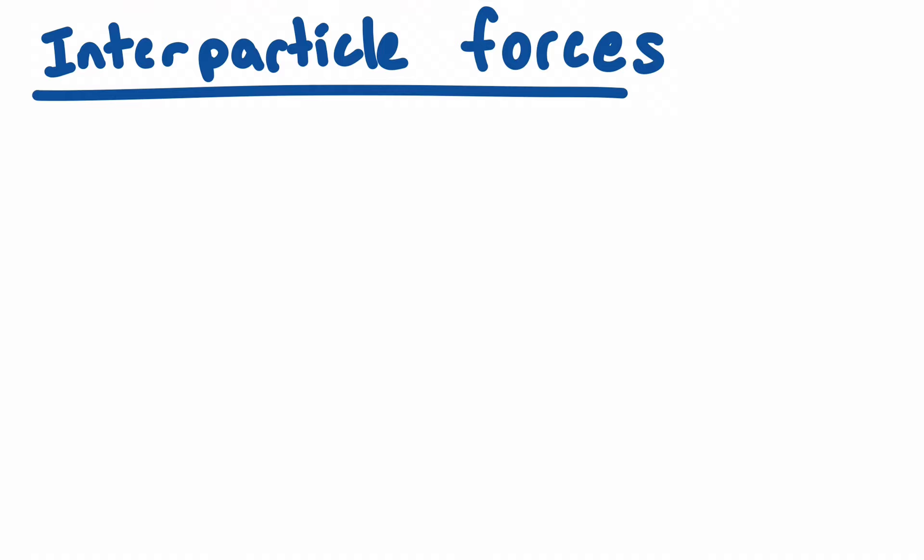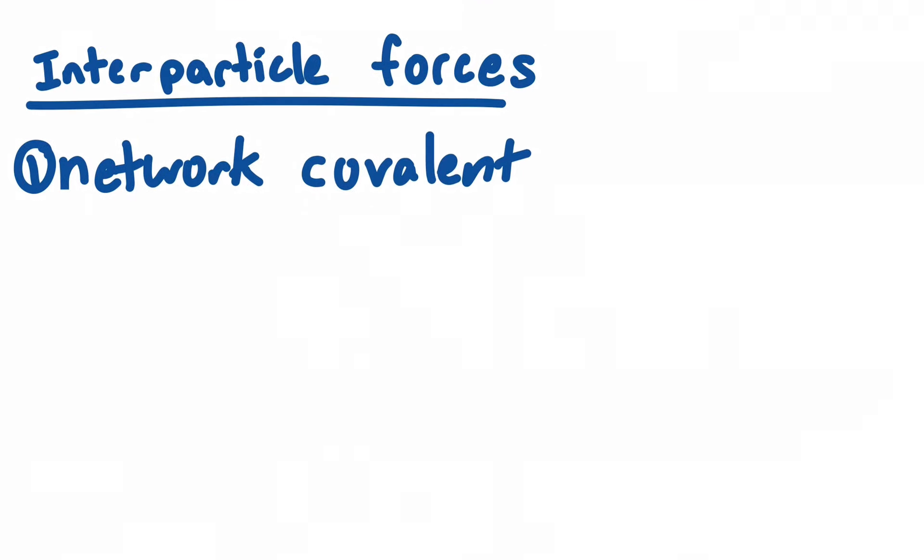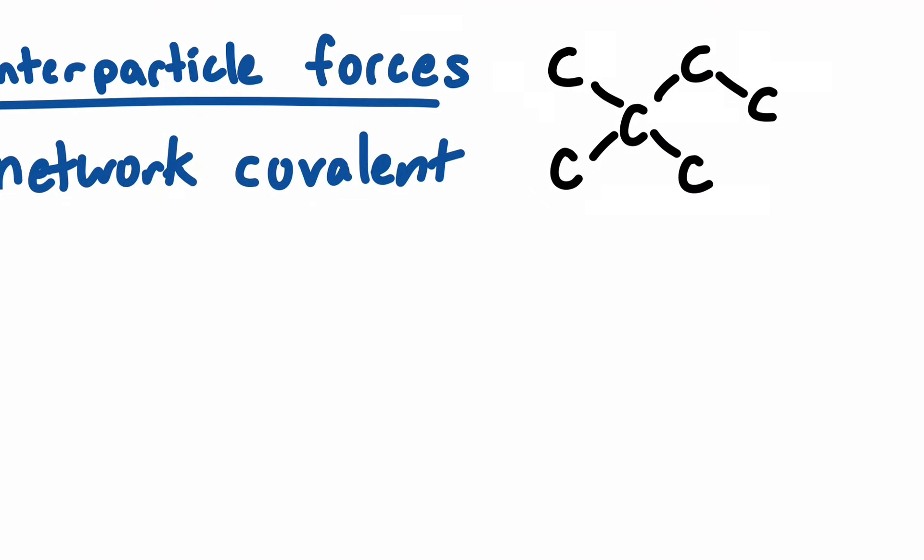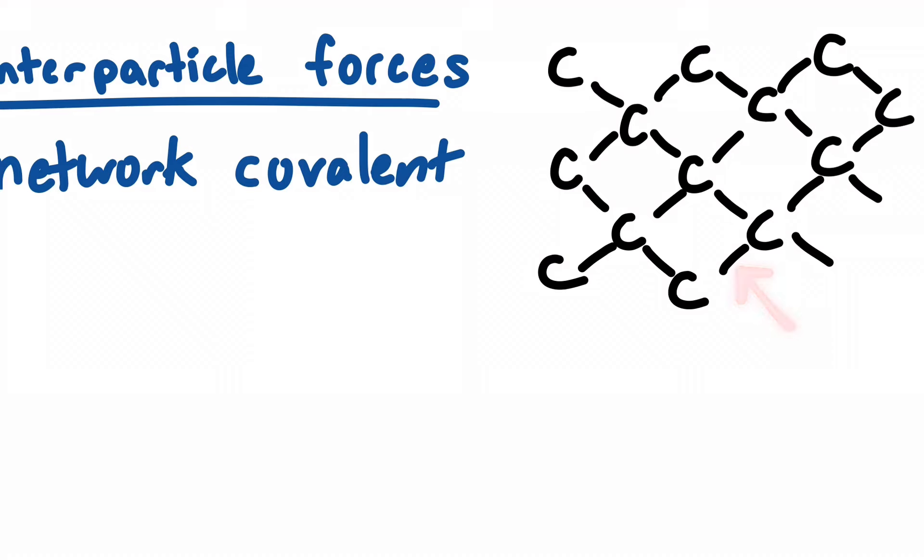The strongest forces of attraction are found in what are called network covalent substances. That's when you have very strong covalent bonds connecting things. For example, carbon's allotropes of graphite or diamond are a continuum, a three-dimensional continuum of covalent bonds between all these carbon atoms. I'm drawing it flat, but you should know it is not two-dimensional. It's actually three-dimensional for something like graphite, and it just keeps going. So you actually break covalent bonds when you melt, so they have among the highest forces of attraction.